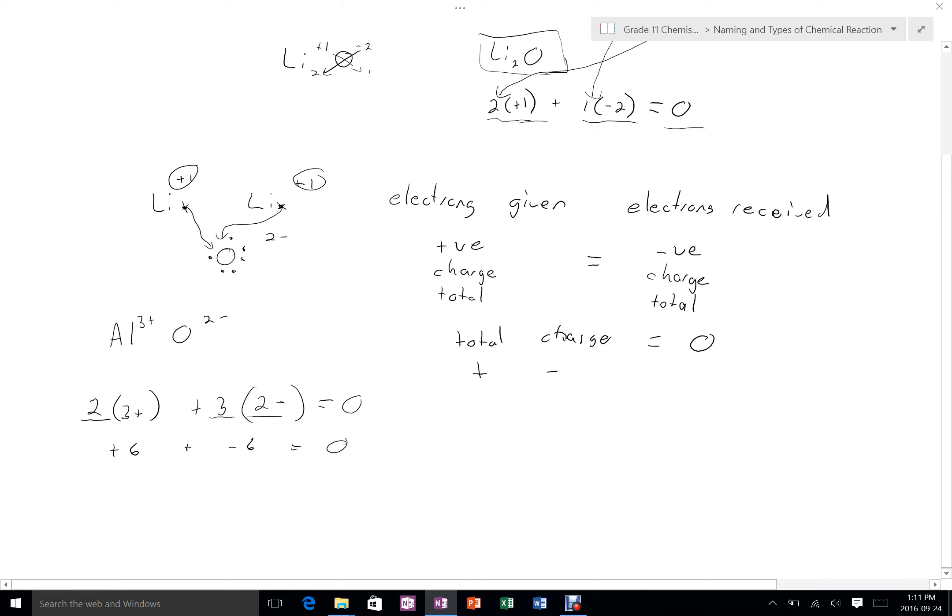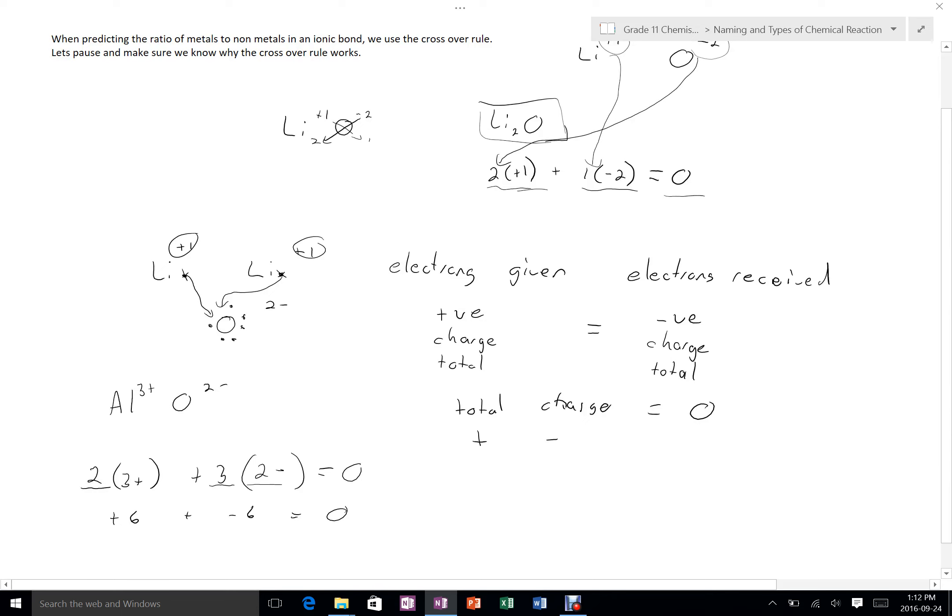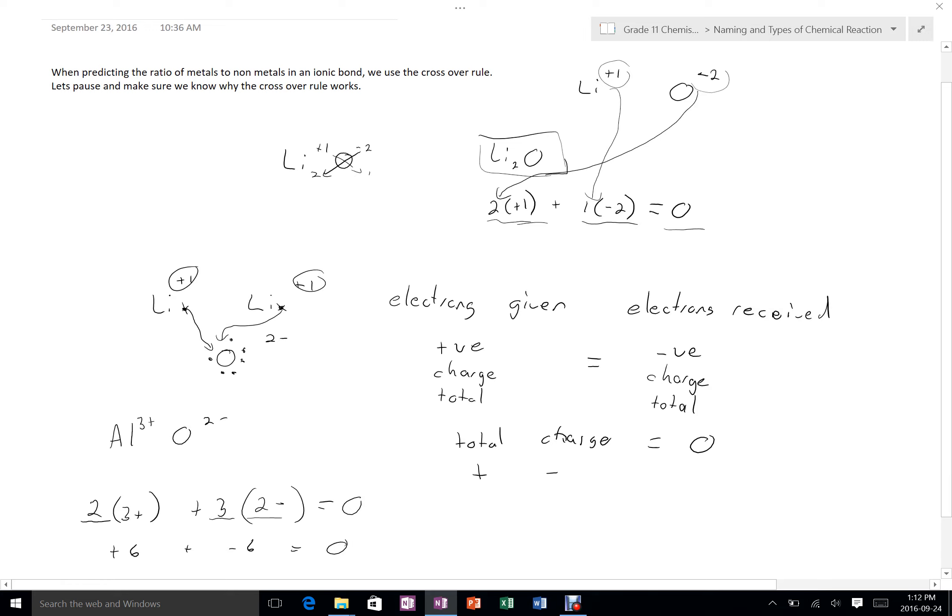So that's just a little explanation of why the crossover rule works. Just so that as you're going through and you're using it to predict the ratios of ionic compounds, hopefully you have a little bit more confidence that you understand that effectively what you're doing is you're keeping the overall crystal or the overall smallest unit of the crystal neutral.